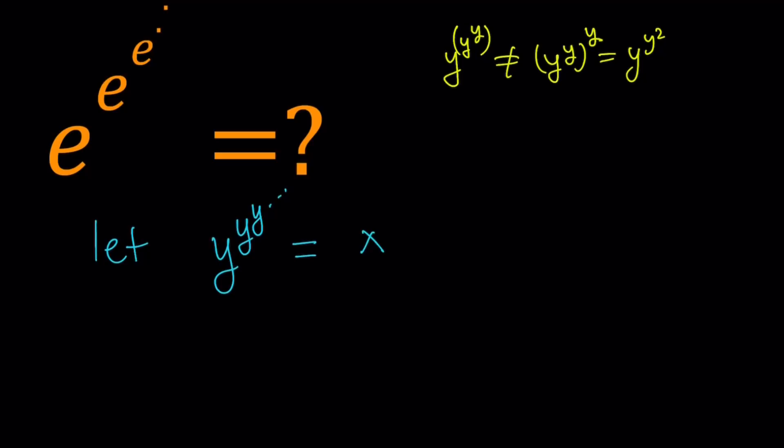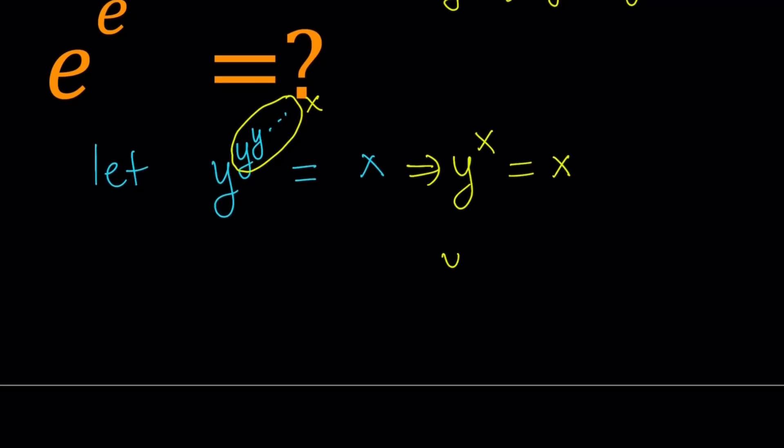So if y to the power y to the power y so on and so forth equals x, then this is the same thing as x, isn't it? Based on our assumption. Of course, there are some issues that I'm skipping here. I know it's not rigorous. Don't be mad if you're a real mathematician, because I'm not. Anyways, this is y to the power x equals x, and from here, we can raise both sides to the power 1 over x, as long as x does not equal 0.